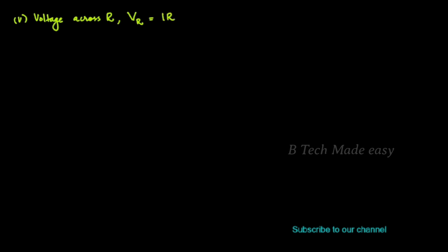We have to find the voltage across R. Voltage across R is VR = I × R. Substituting I = 2.22 A and R = 100 ohms, VR = 222 V.